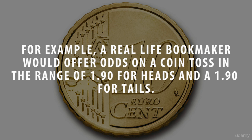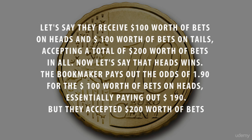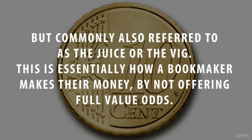For example, a real-life bookmaker would offer odds on a coin toss in the range of 1.9 for heads and 1.9 for tails. Let's say they receive $100 worth of bets on heads and $100 worth of bets on tails, accepting a total of $200 in bets. Now let's say heads wins — the bookmaker pays out at odds of 1.9 for the $100 worth of bets on heads, essentially paying out $190. But they accepted $200 worth of bets, so they keep $10 for themselves. This is popularly known as the commission, but commonly also referred to as the juice. This is essentially how a bookmaker makes their money — by not offering the full value odds.